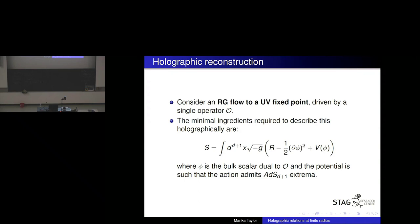The basic setup I want to start with, which gives a clue about what I should do for holography at finite radius, is something familiar. If I'm trying to describe a relativistic RG flow, I'm going to have a UV fixed point. The minimum ingredients I need to describe this holographically are the graviton and a scalar field dual to the operator driving the flow. So the minimal thing I can write down is an action in D+1 dimensions to describe a D-dimensional RG flow with gravity and a scalar, with a potential admitting AdS extrema so I can have a UV fixed point.